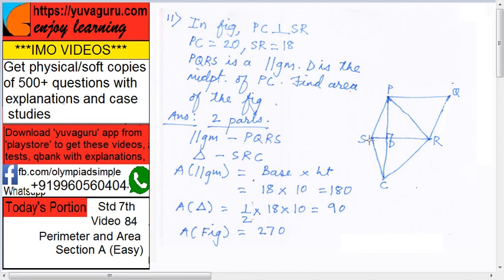Now area of triangle is half base height. So half into base is 18, into height is 10, because 20 and D is the midpoint, so it becomes 90.